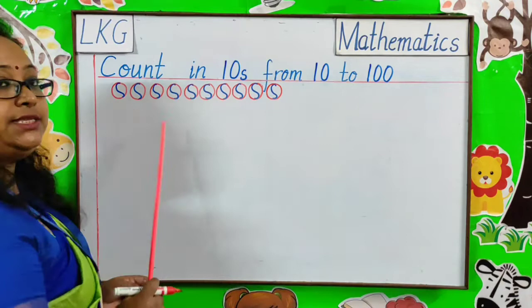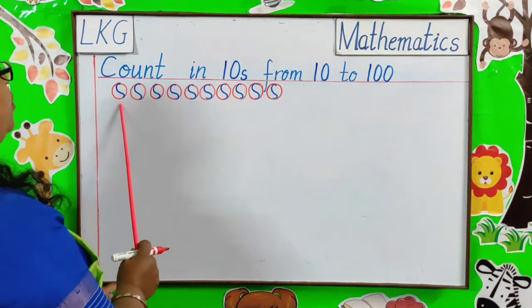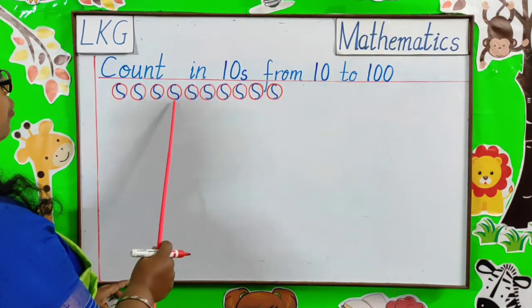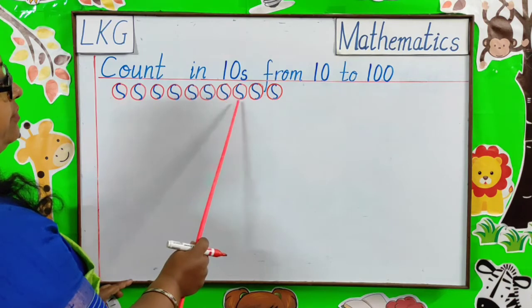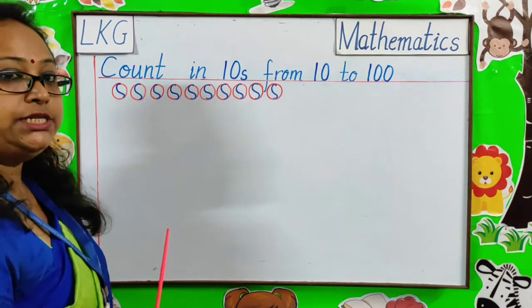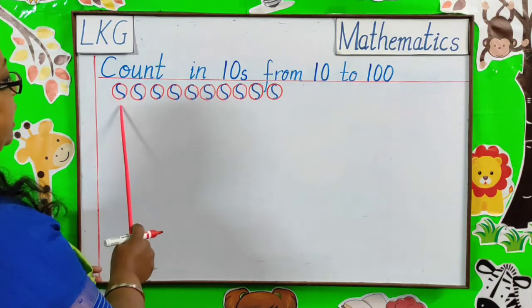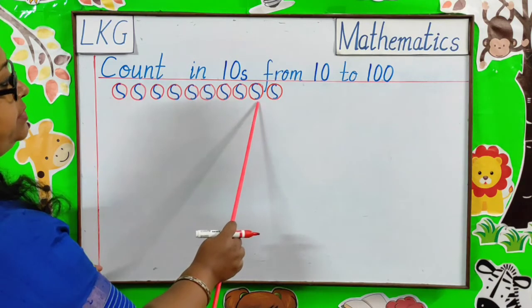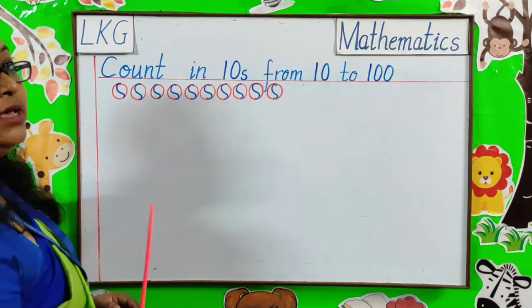Children, as you can see, I have drawn 1, 2, 3, 4, 5, 6, 7, 8, 9, 10 balls here. In counting in 10's, we have to skip 9 numbers and the 10th number is our answer.